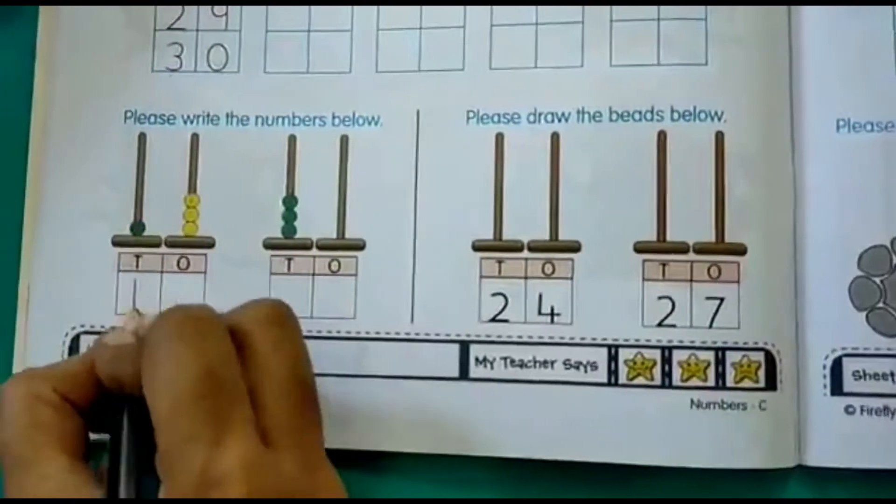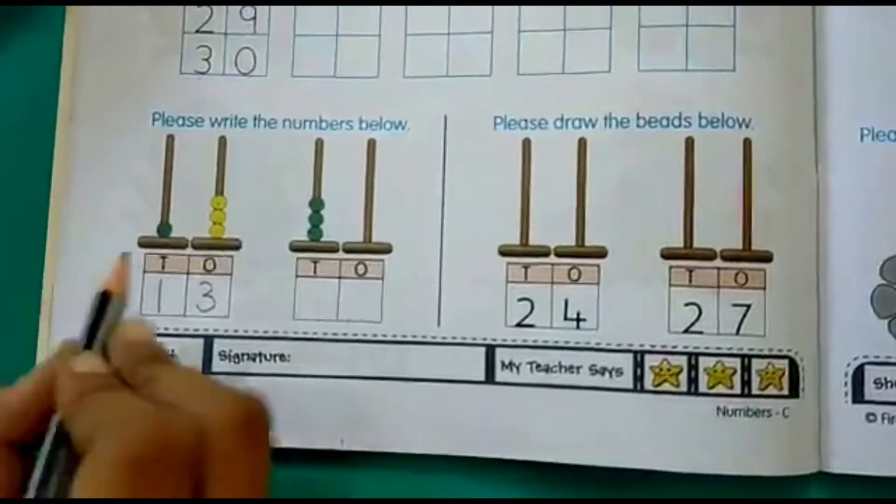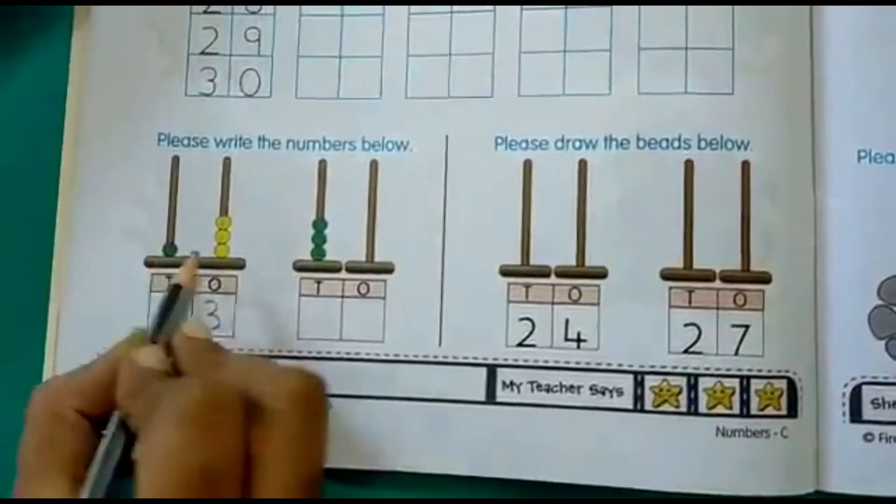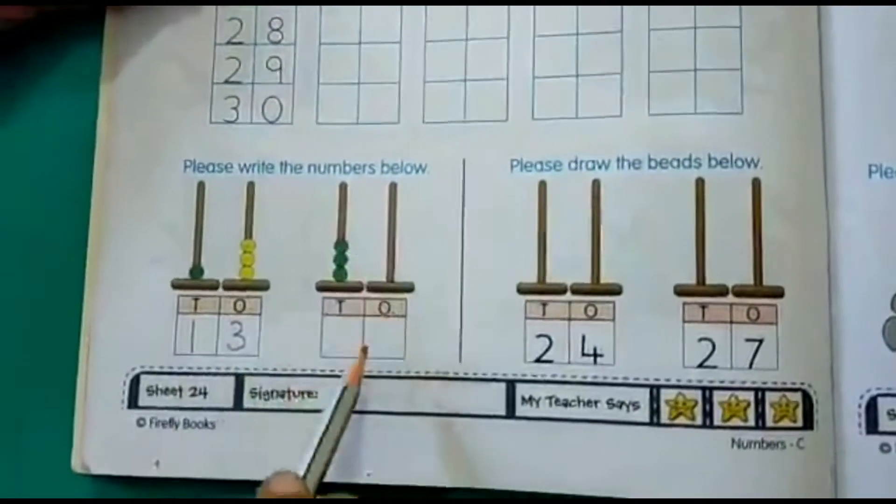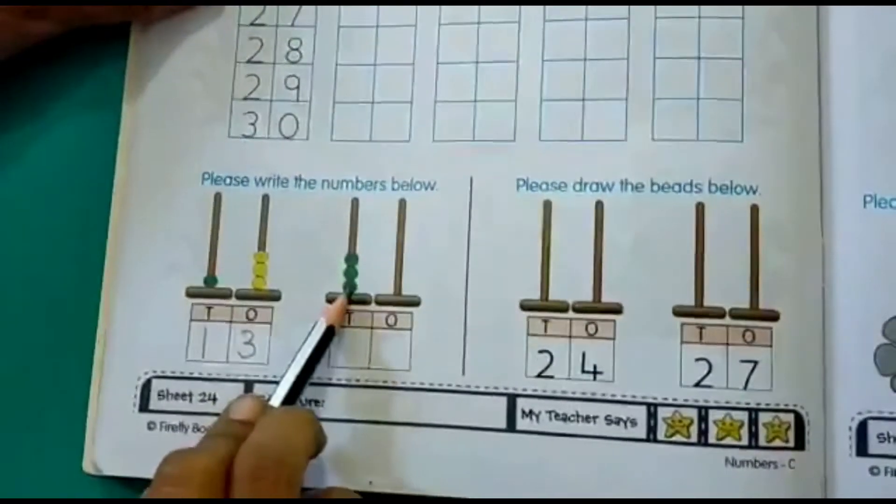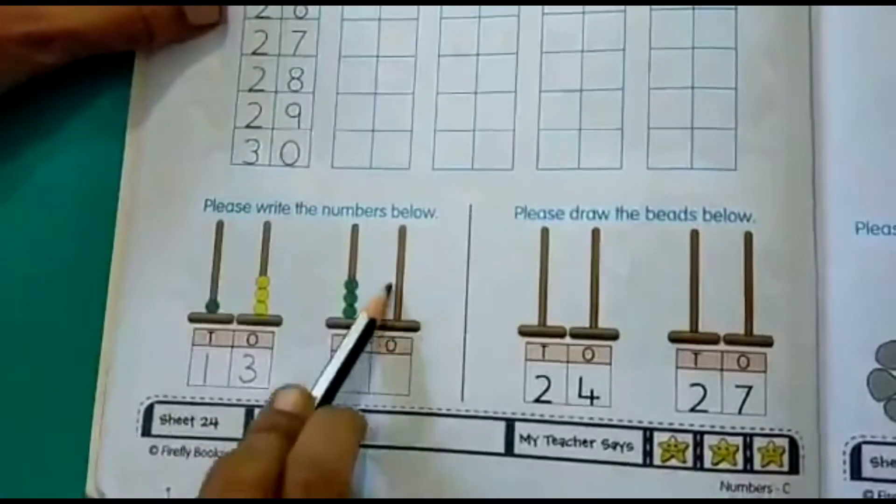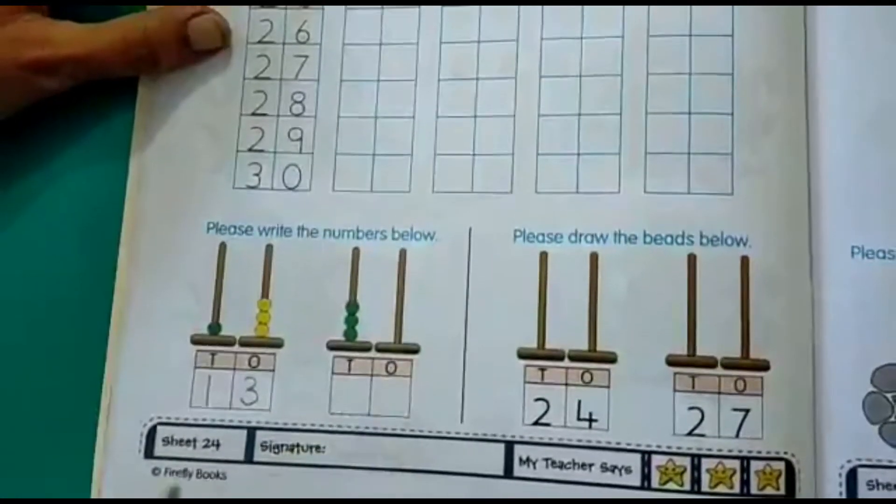So how many beads are there? 13, right? This will be considered as 10, 11, 12, 13. So in the same way, you have to count the beads here also. If these are 10 beads, so it will be 10, 20, 30. How many on this side? You have to see that and write the numbers over here.